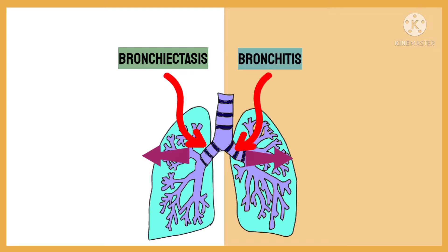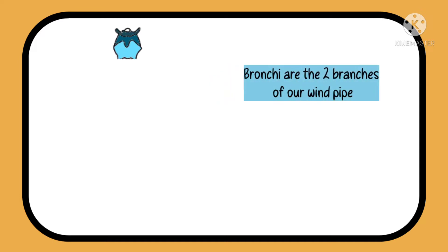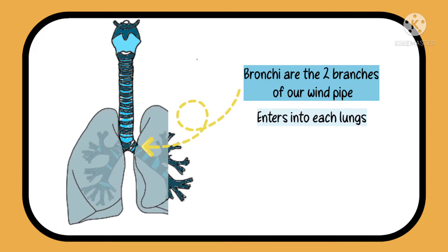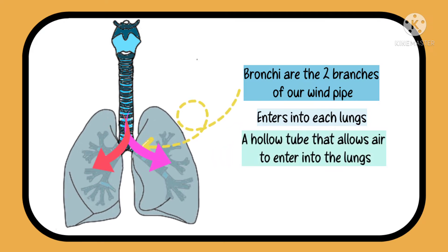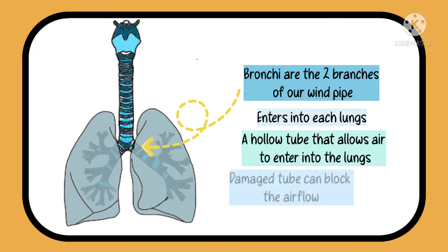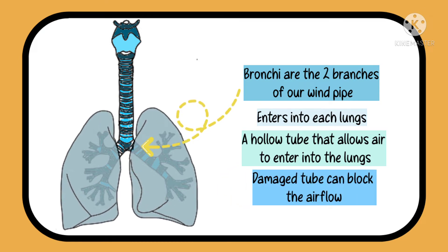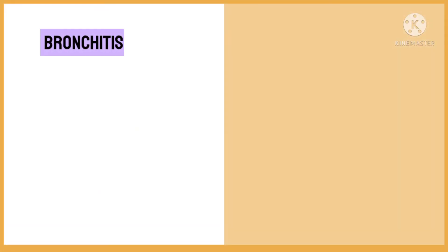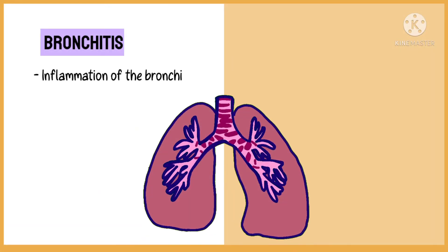For those who don't know, the bronchi are the two branches of the windpipe which divide to enter into the left and the right lung. If we look at the bronchi, it is just a hollow pipe which allows air to enter inside the lungs, but sometimes this pipe can get damaged and block the airflow.